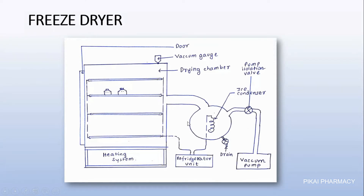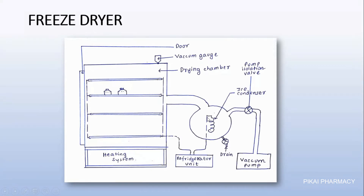First we decrease the temperature using the refrigerant unit to minus 20 degrees centigrade, converting all moisture content inside the sample to ice. Then we turn on the vacuum pump, which decreases the pressure inside the drying chamber. When heat is applied at low pressure and temperature is increased, it causes sublimation. The ice at the surface of our sample gets sublimized to vapor — converted from solid ice to vapor state. This vapor is collected in the ice condenser where it is again converted back into ice.